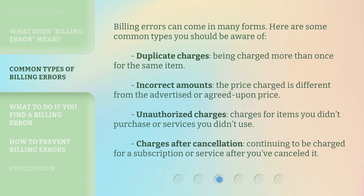Billing errors can come in many forms. Here are some common types you should be aware of. Duplicate charges: being charged more than once for the same item. Incorrect amounts: the price charged is different from the advertised or agreed upon price.